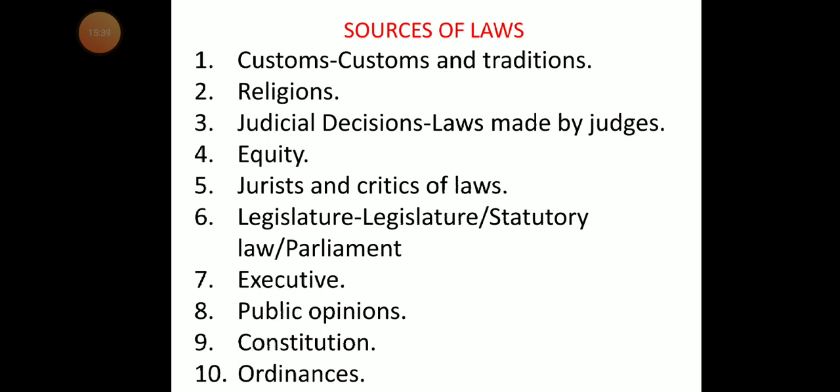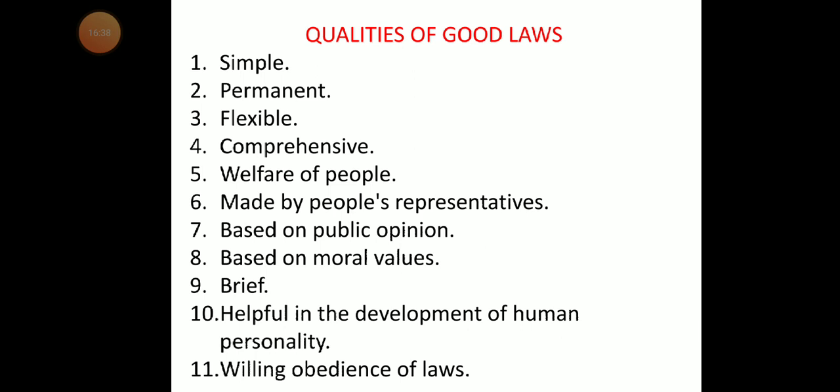In countries like Switzerland, the referendum and other direct forms of democracy are applied where people approve or disapprove laws made by the legislature. Number eight is ordinances — ordinances are issued by the executive in the absence of the legislature or when a situation requiring law arises urgently. In India, the President issues an ordinance on the advice of the Prime Minister and Council of Ministers. Once parliament meets, the ordinance must get approval; if it doesn't, it ceases to exist within a fixed period.